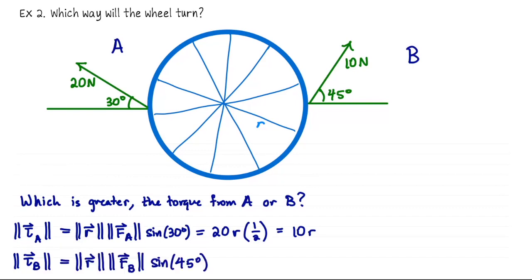On the other hand, what's happening over at B? The radius is the same. So that's our position from the center of the wheel out to the edge of the wheel where the force is being applied. This force though is 10 newtons, and sine of 45 degrees is square root of 2 over 2. You crunch that, you get 5 times the square root of 2 times the radius.